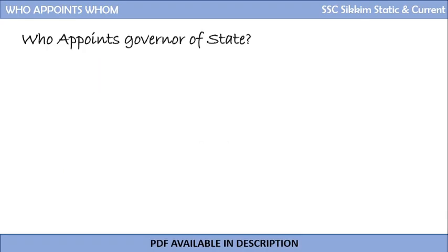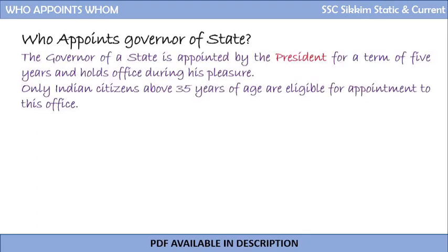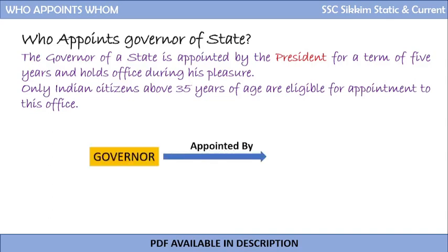Who appoints the governor of the state? We just saw that the governor appoints the chief minister, but who appoints the governor? The correct answer is the President of India. The governor of a state is appointed by the President for a term of five years and holds office during his pleasure. Only Indian citizens above 35 years of age are eligible for appointment to the office of governor.